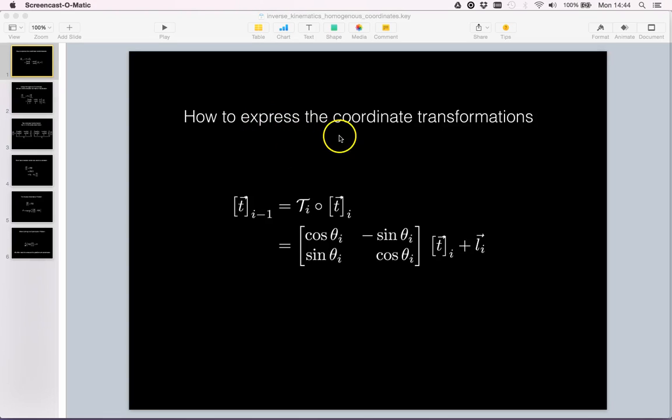We are now ready to write up how transformations are expressed mathematically. We previously saw in our kinematic symbol notation that we recursively transform a tooltip vector from a child coordinate frame link i into its parenting link frame i-1, and we use the transformation Ti for that.